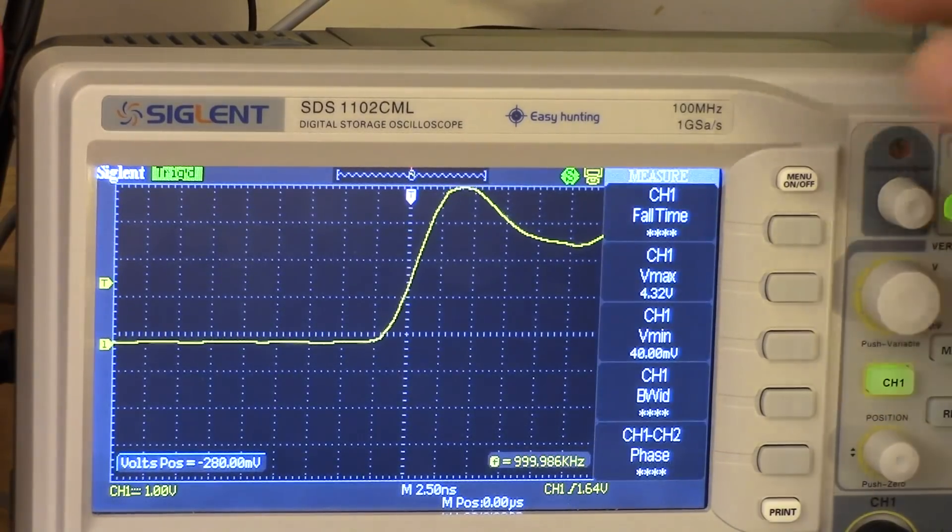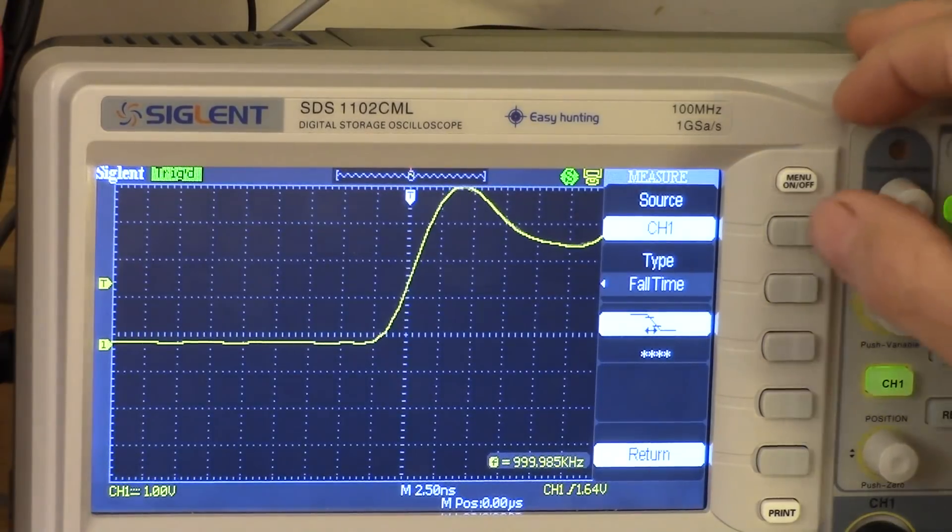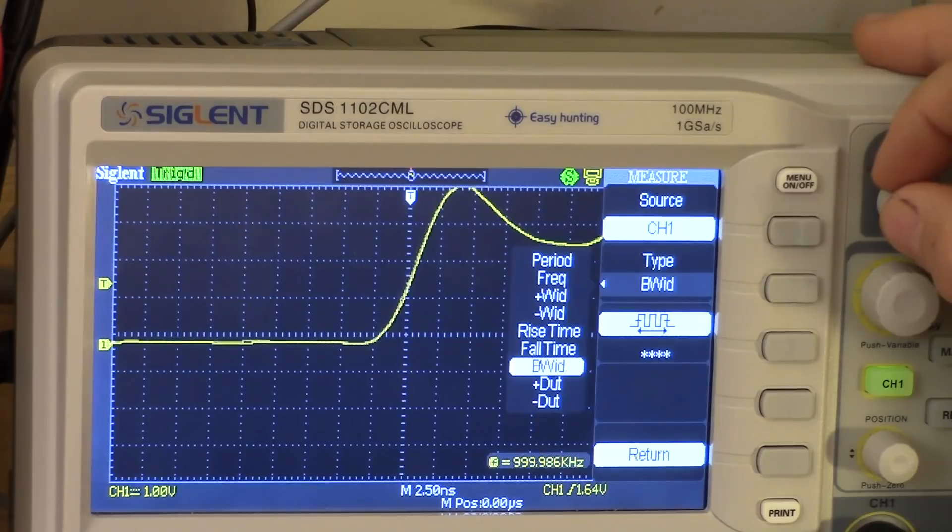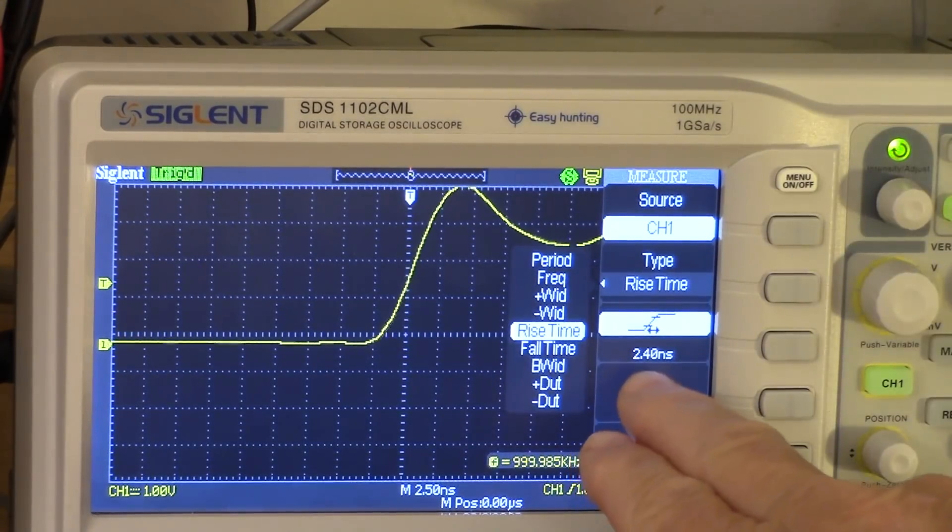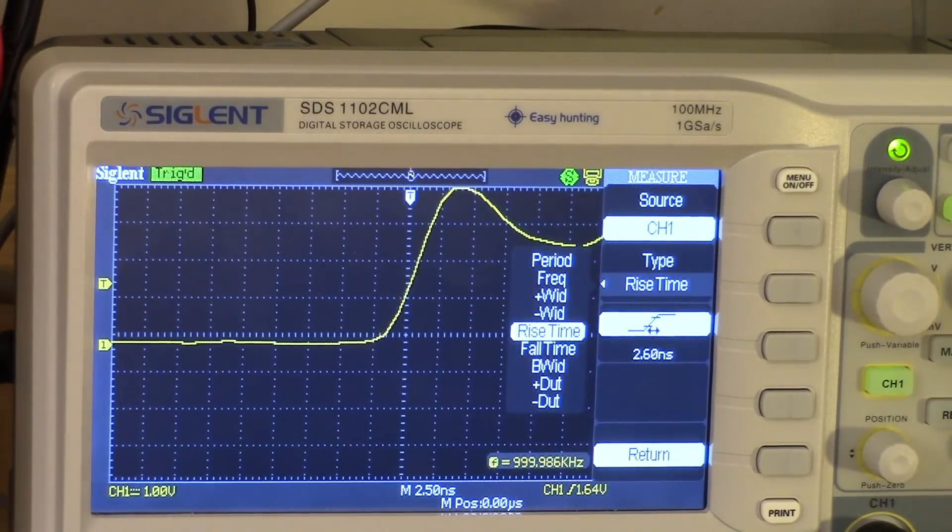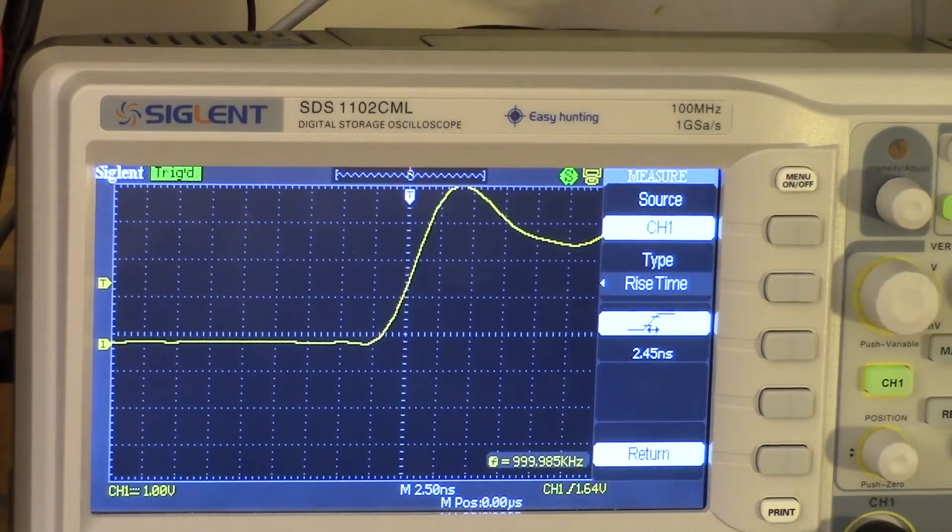And you can get a pretty good idea what that rise time is by looking at that. But why not be lazy? I'll go ahead and use the automatic measurements because they are so nice. Come from channel one. And rise time is right here. And you can see it's measuring about two and a half to three nanoseconds, which for a 100 megahertz scope is astonishing. That's a great number. So it does a great job in that department.